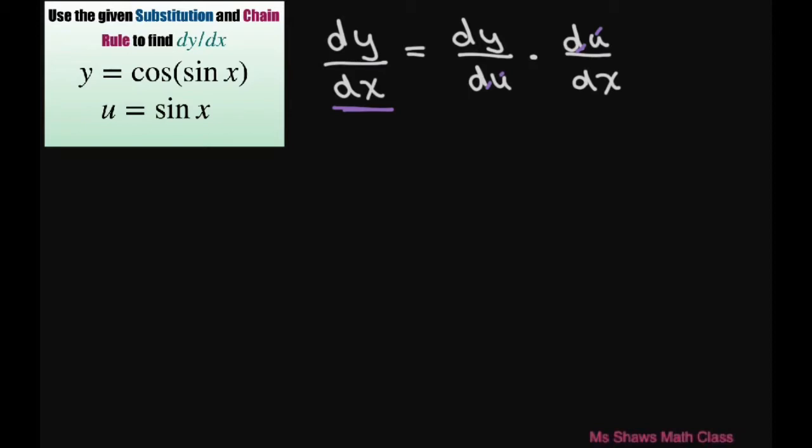So let's start this. We're going to let y equal cosine of u and we have u equals sine of x.